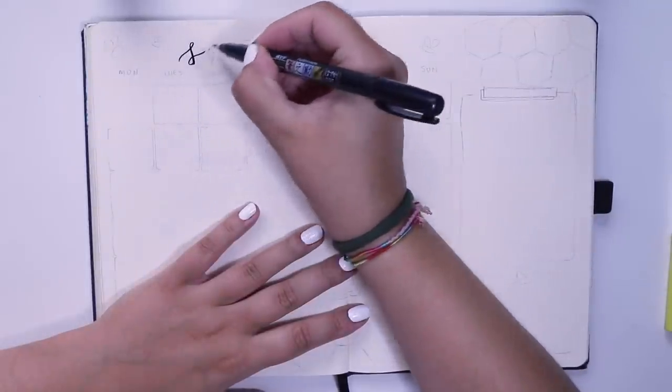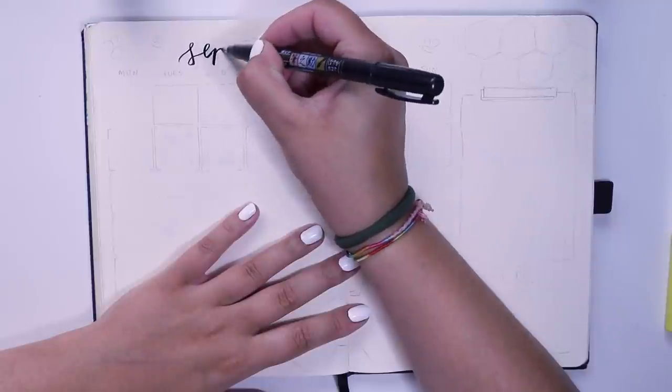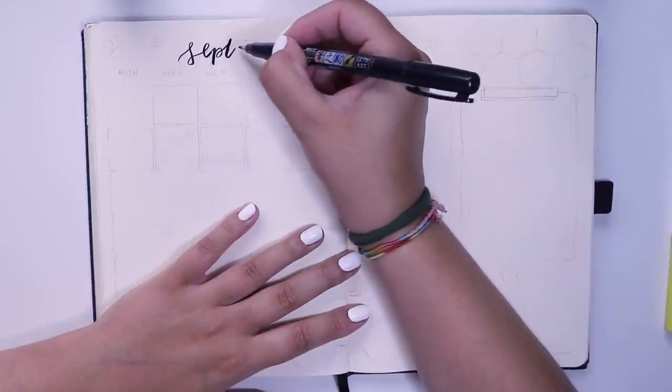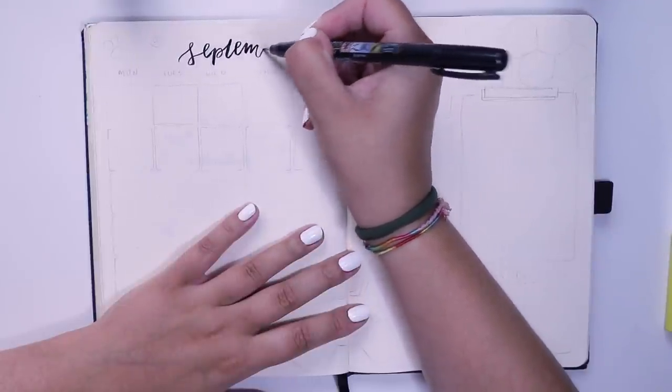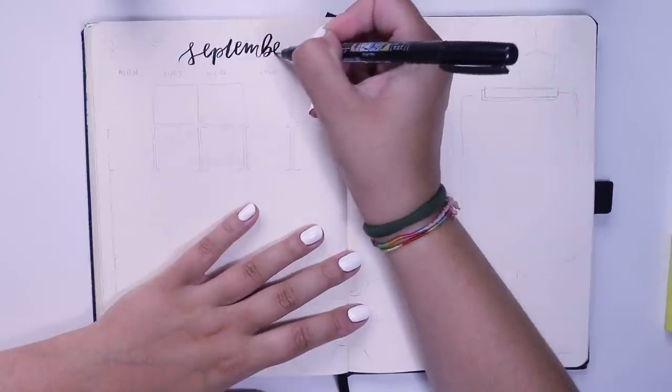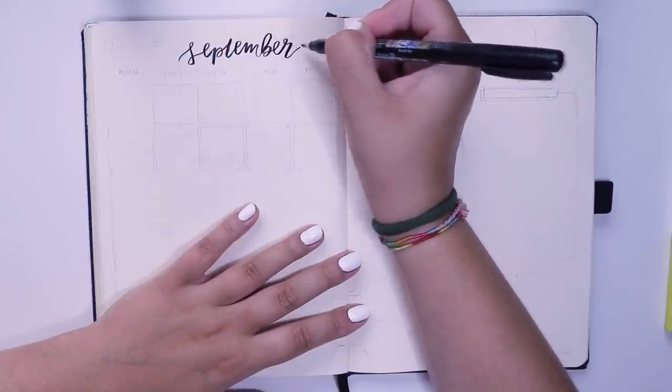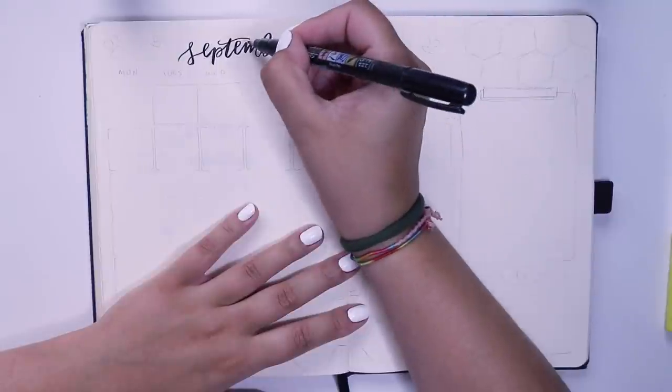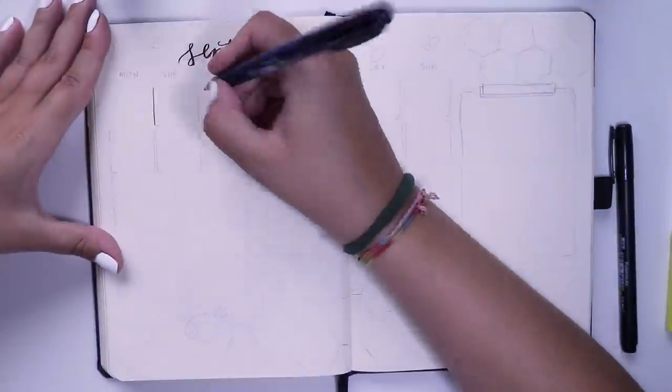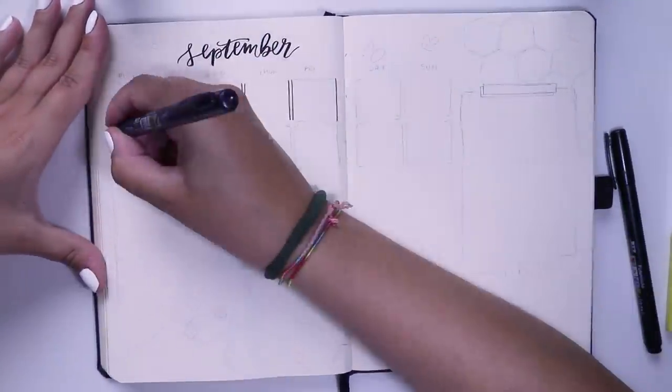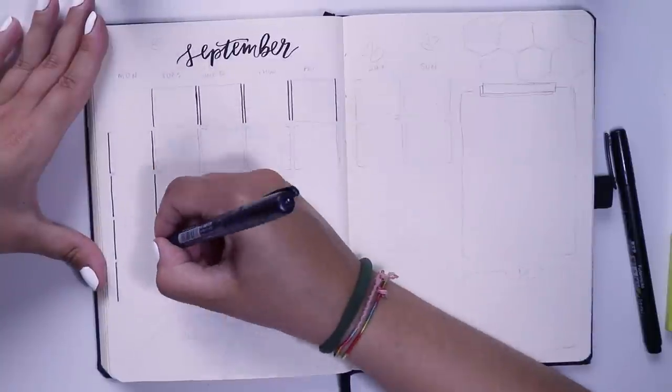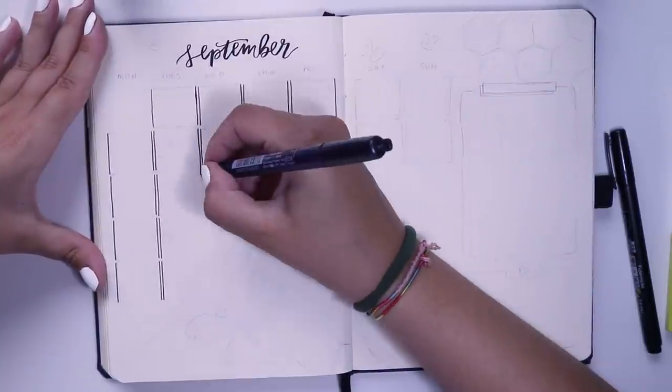Going into my monthly spread, I wrote out September at the top and then proceeded to draw in my calendar for the month. For those of you who wonder, I normally do five by five little squares for the days of the month.